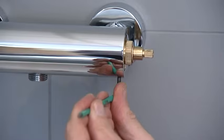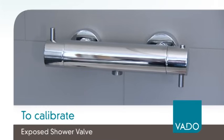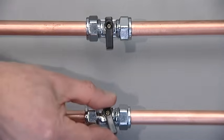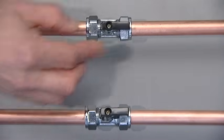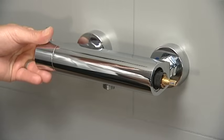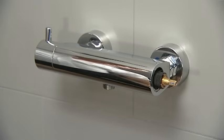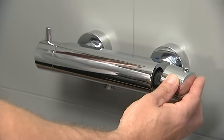You will now need to calibrate the cartridge. Unisolate both hot and cold water supplies and check for leaks. Turn the valve on and ensure the temperature control handle is turned fully clockwise into the cold position.